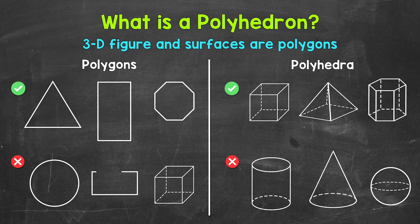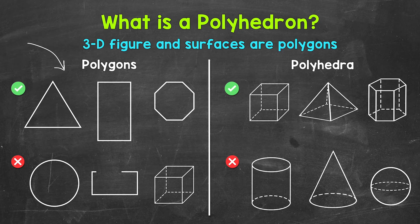Let's start with examples of polygons so we understand what those faces have to be, and then we will move to polyhedra. Here are some examples of polygons. They are plane figures, so two-dimensional or flat. They are closed, and the sides are line segments, so the sides have to be straight.